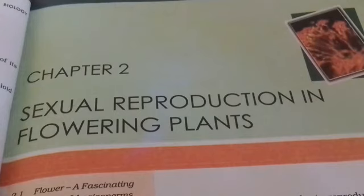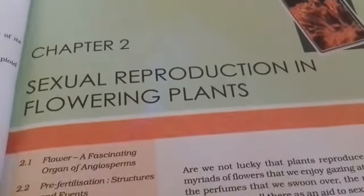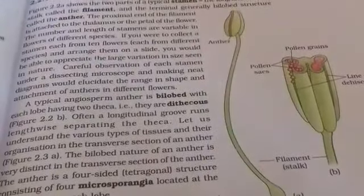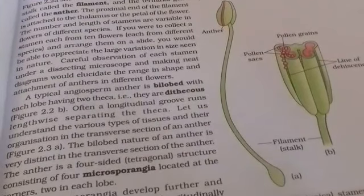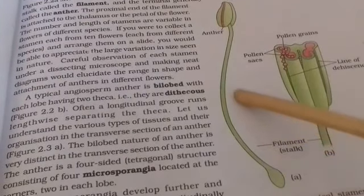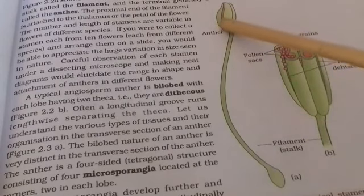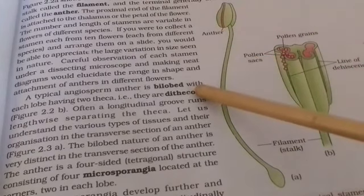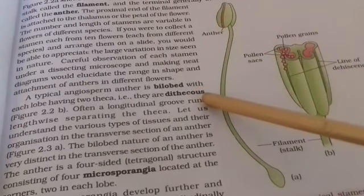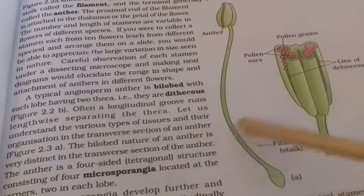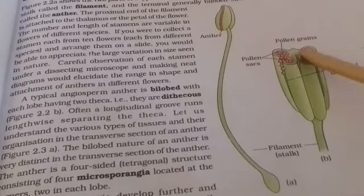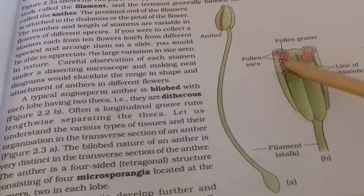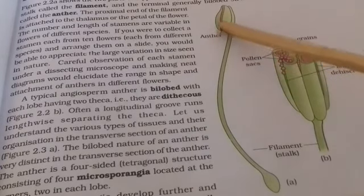Among those, the essential whorls are stamen and pistil. Stamen is the male reproductive part. It has a filamentous, slender part called the filament and the swollen region called the anther. The anther is bi-lobed and each lobe has two theca, so most anthers are dithecous in nature. Here you can see the two lobes and the two theca in that bi-lobed structure, connected by connective tissue.